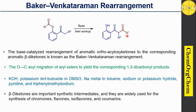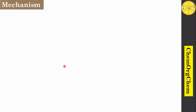This class of 1,3-dicarbonyl compounds — that means β-diketones — are important synthetic intermediates, and they are widely utilized for the synthesis of various natural products such as flavones, isoflavones, and coumarins.